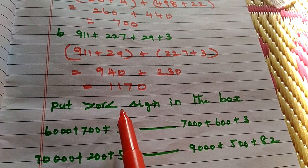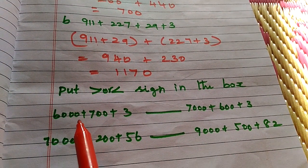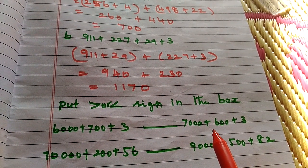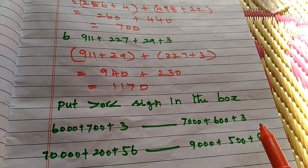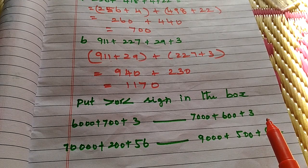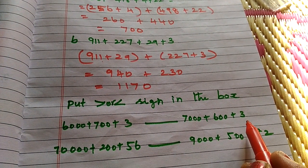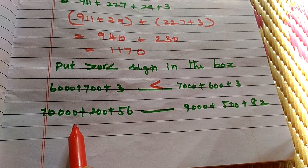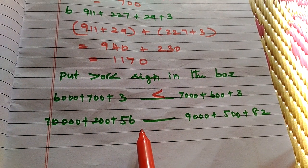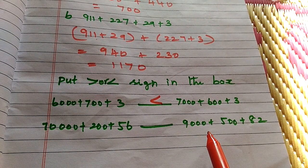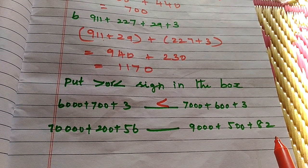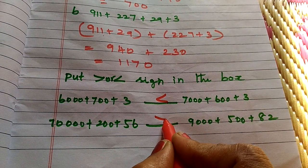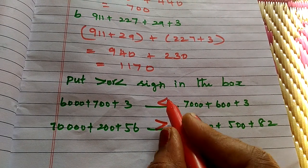Put greater than or less than sign in the box. 6,000 plus 700 plus 3. Which one is biggest number? Which one is big number? 7,603 is big number? Less than. Then, 70,256, then 9,582. Which one is big? 70,256. Greater than. Crocodile mouth eat only big numbers.